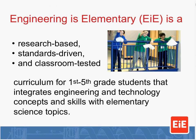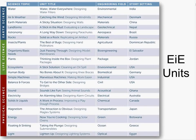The project I work for is called Engineering is Elementary. We're based at the Museum of Science in Boston and we've been around since 2003. We are a curriculum for elementary school students that integrates engineering and technology with the science topics that elementary teachers are already doing in their classrooms. Funded by the National Science Foundation, we have 20 different units. A teacher picking the best-fit unit would start in the left-hand column looking at the science topic and finding which EIE unit best integrates with that.